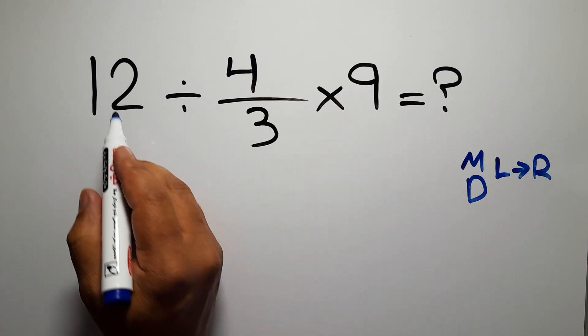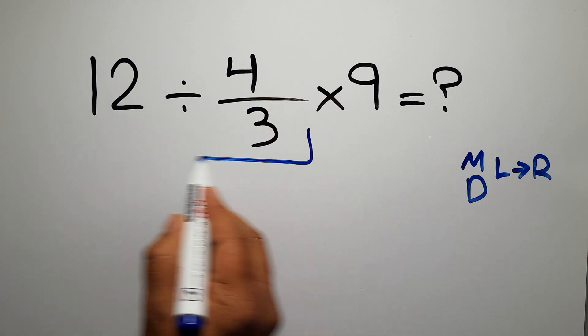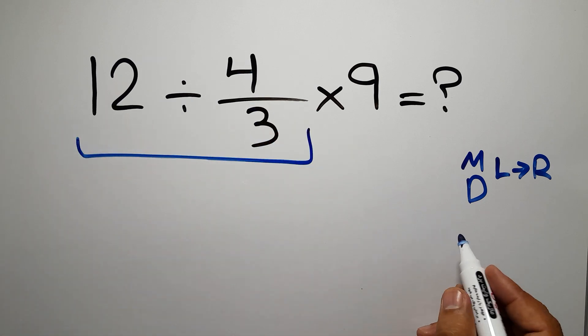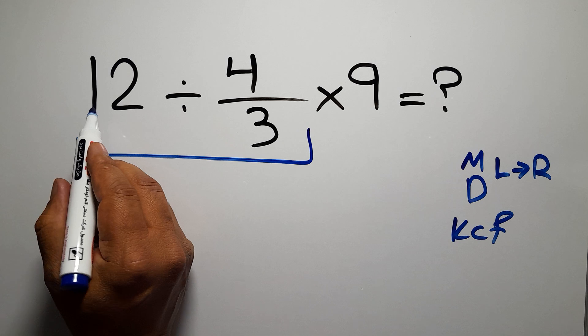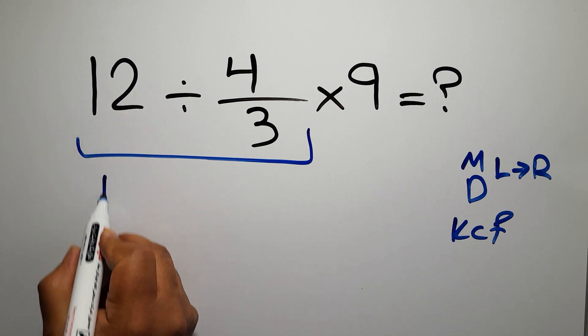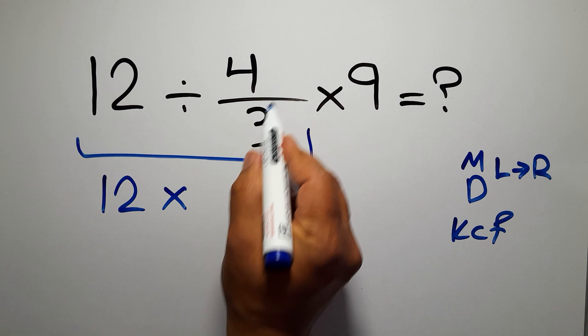Okay, so first, 12 divided by 4 over 3. According to the KCF rule, K stands for keep, C stands for change. We can write, keep the first fraction, change division to multiplication and flip the second fraction.